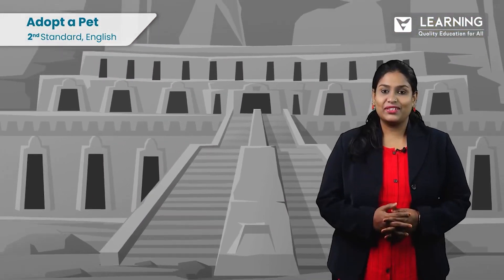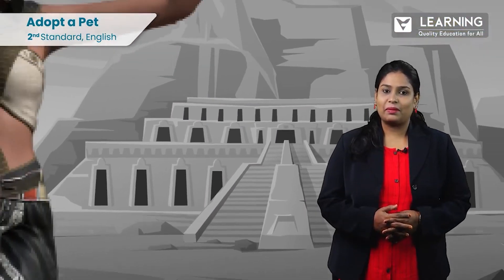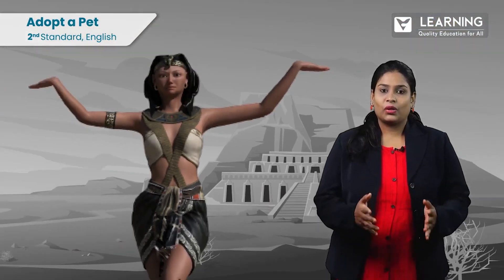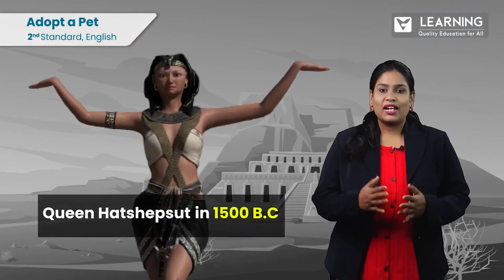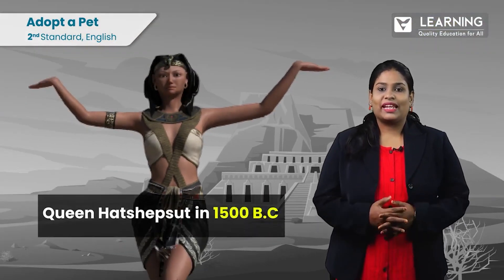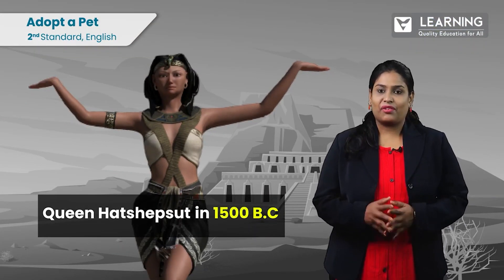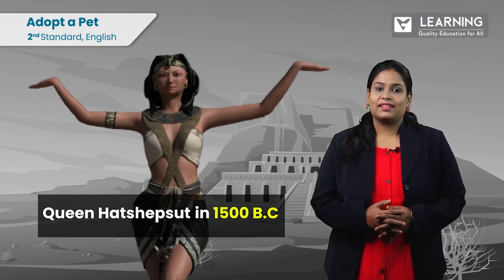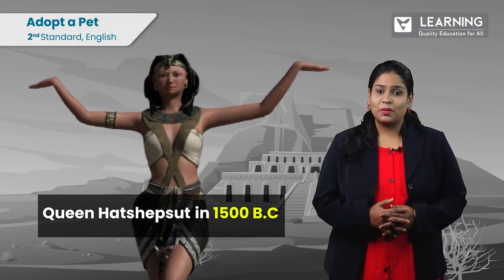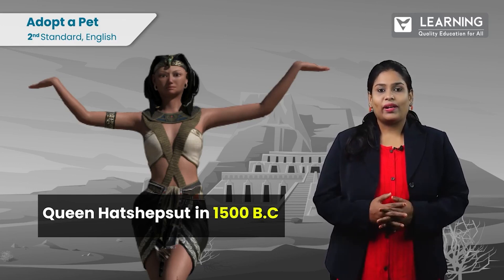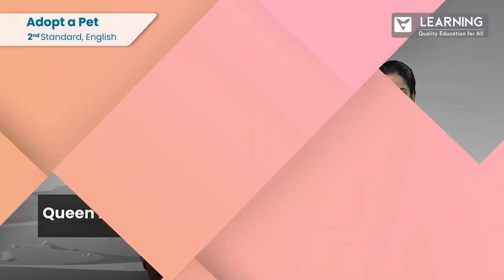The first real zoo was established by Queen Hatshepsut in 1500 BC in Egypt, by collecting animals from all over Africa.